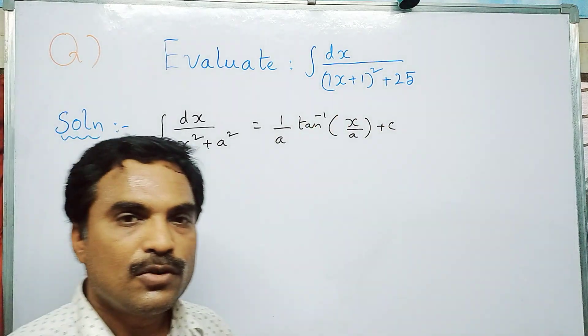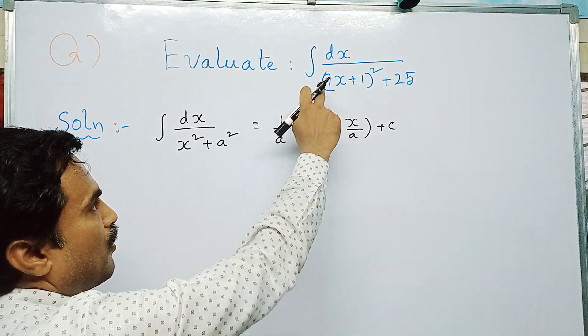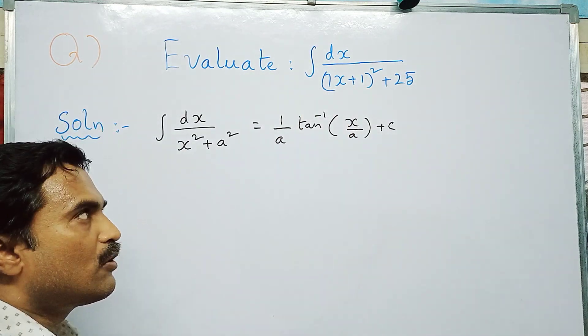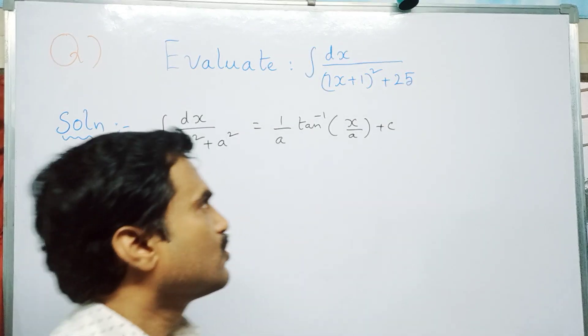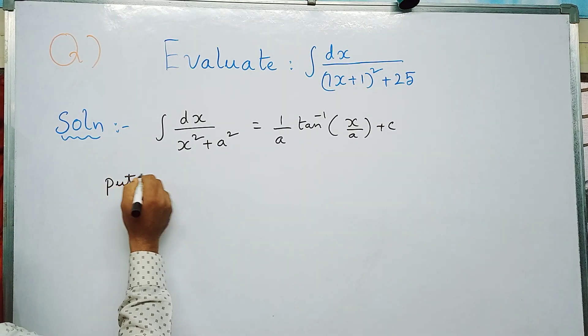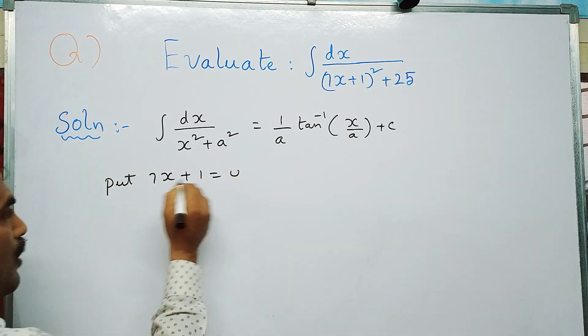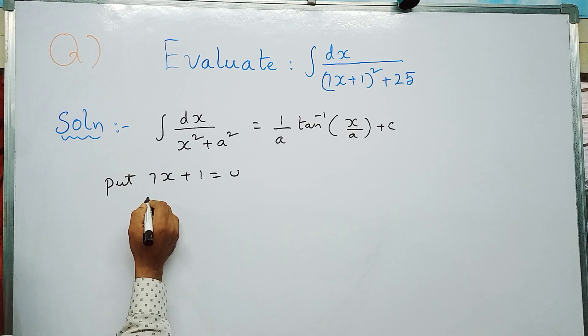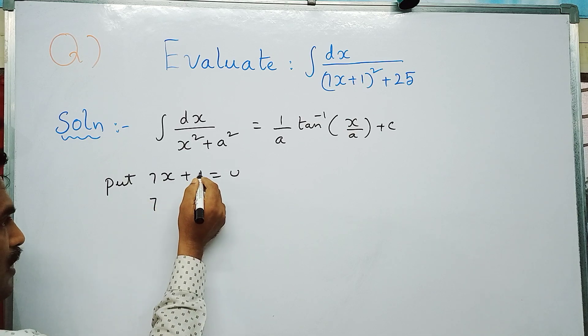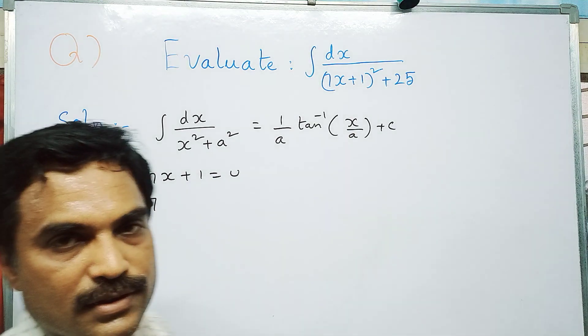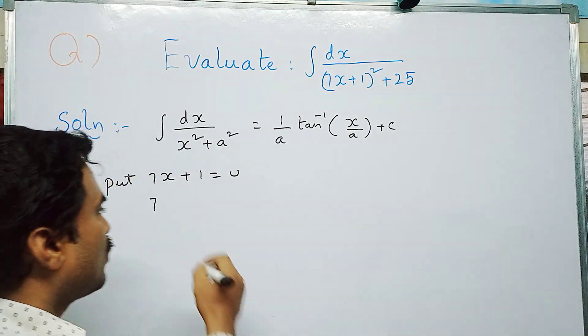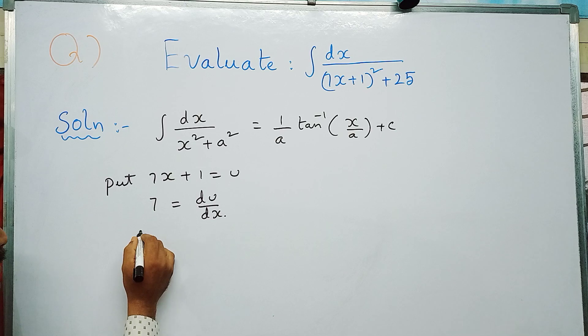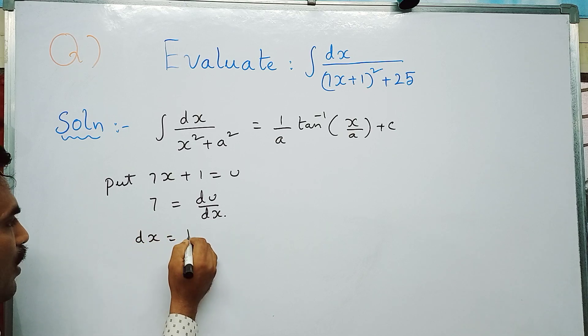The given problem is integral dx by (7x + 1)² plus 25. To solve this, we use substitution method. Put 7x plus 1 equal to u. Now differentiate on both sides: 7 times derivative of x is 1, so 7 plus derivative of constant 1 is 0, equal to du by dx. So we can write dx equal to 1 by 7 du.